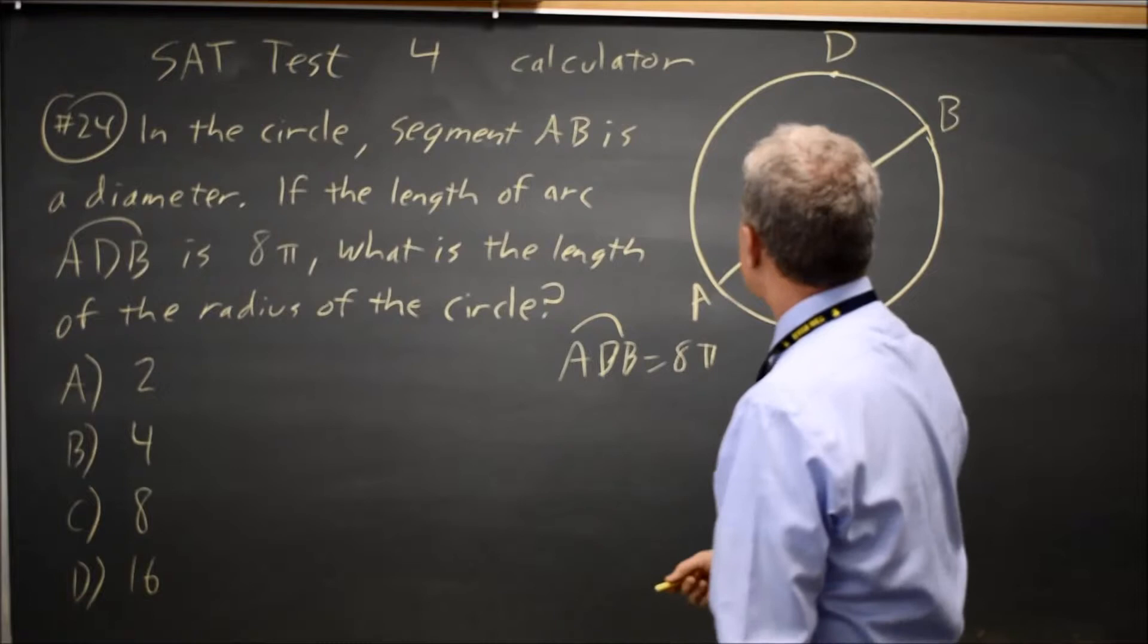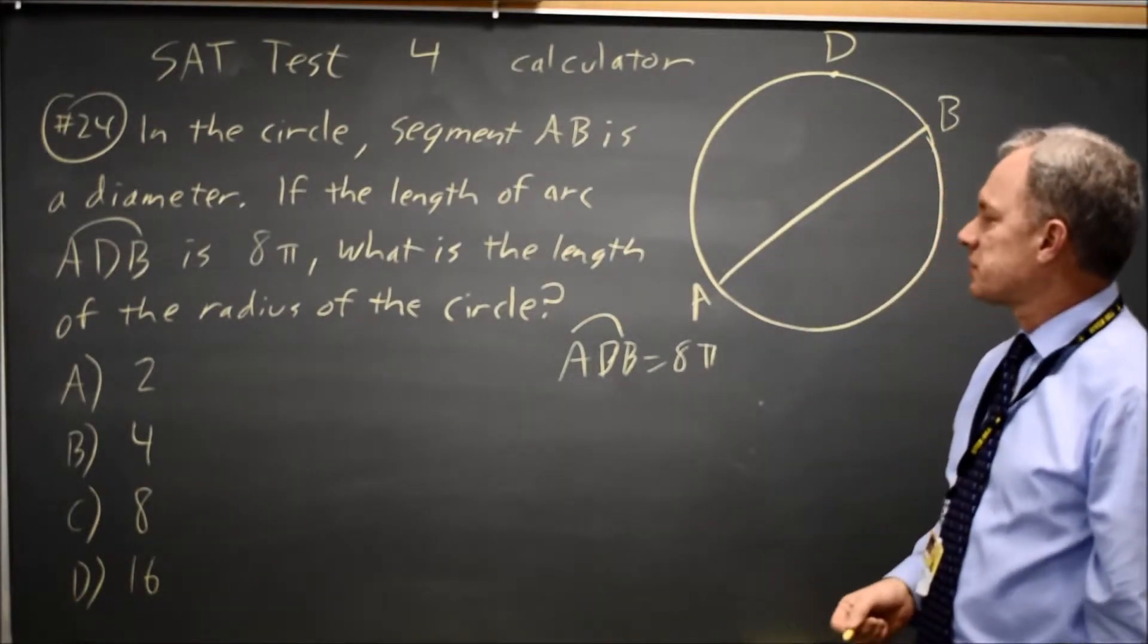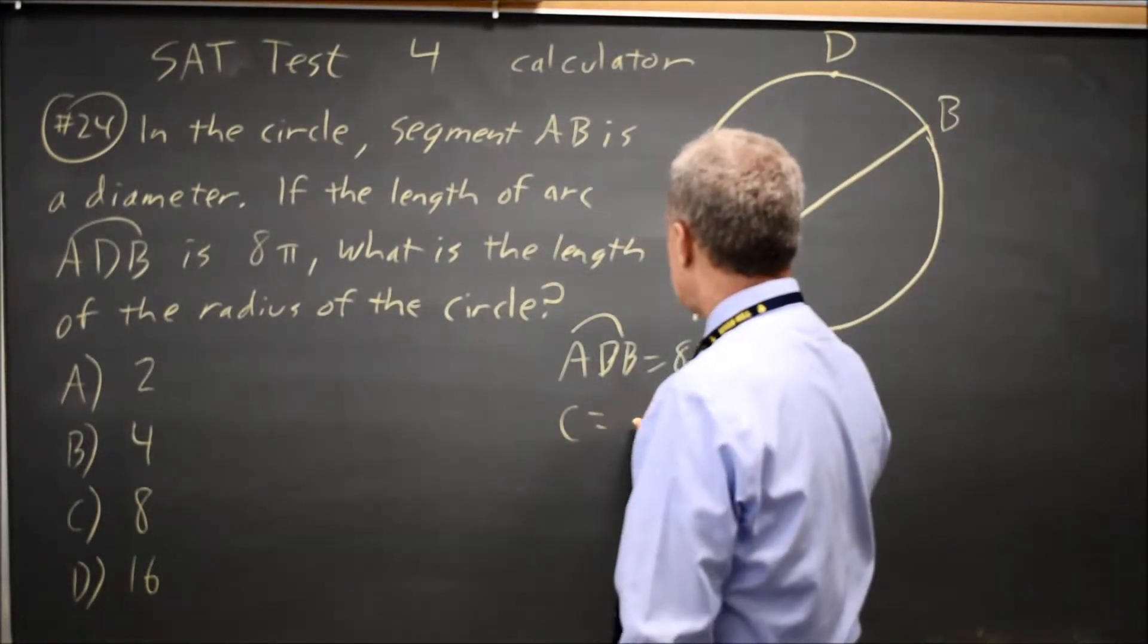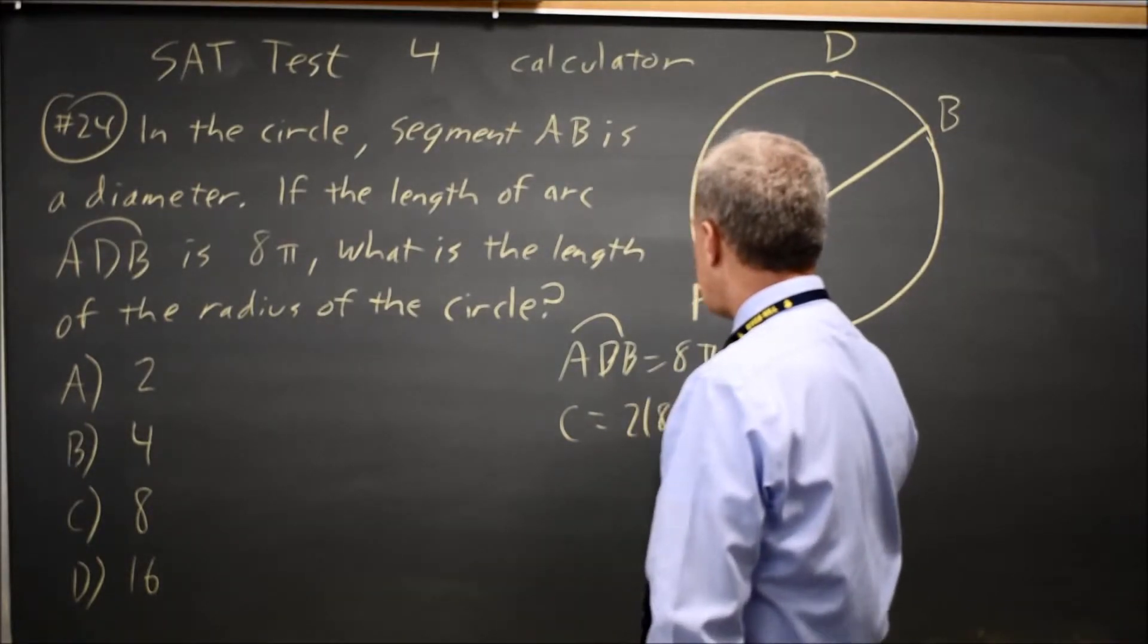If the length of arc ADB is 8 pi, well, ADB is half the circumference if this is a diameter, so the circumference is twice 8 pi.